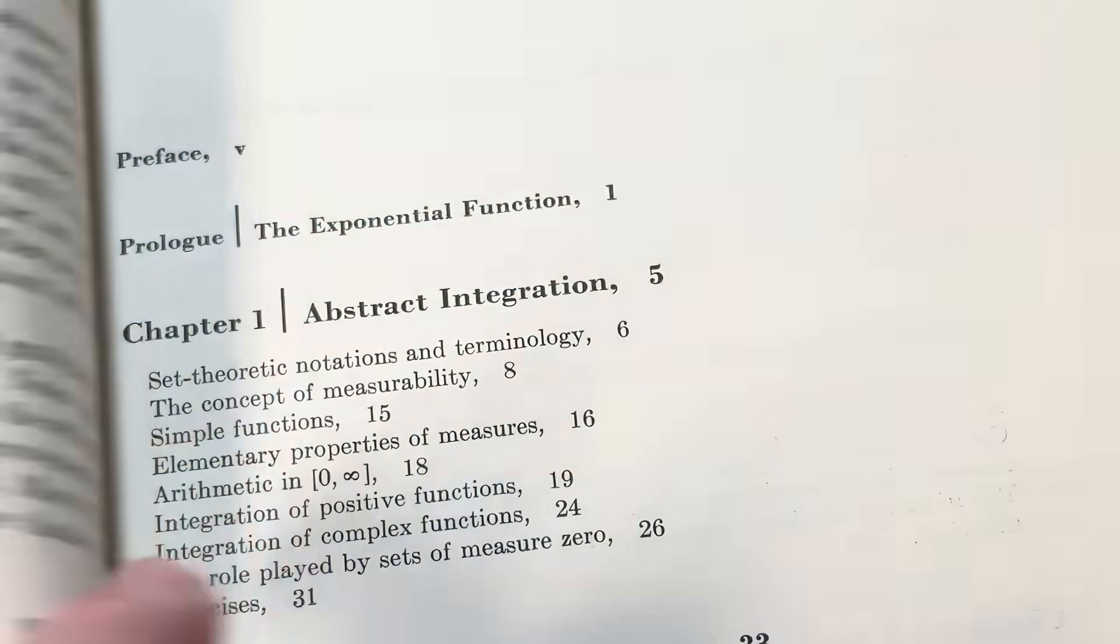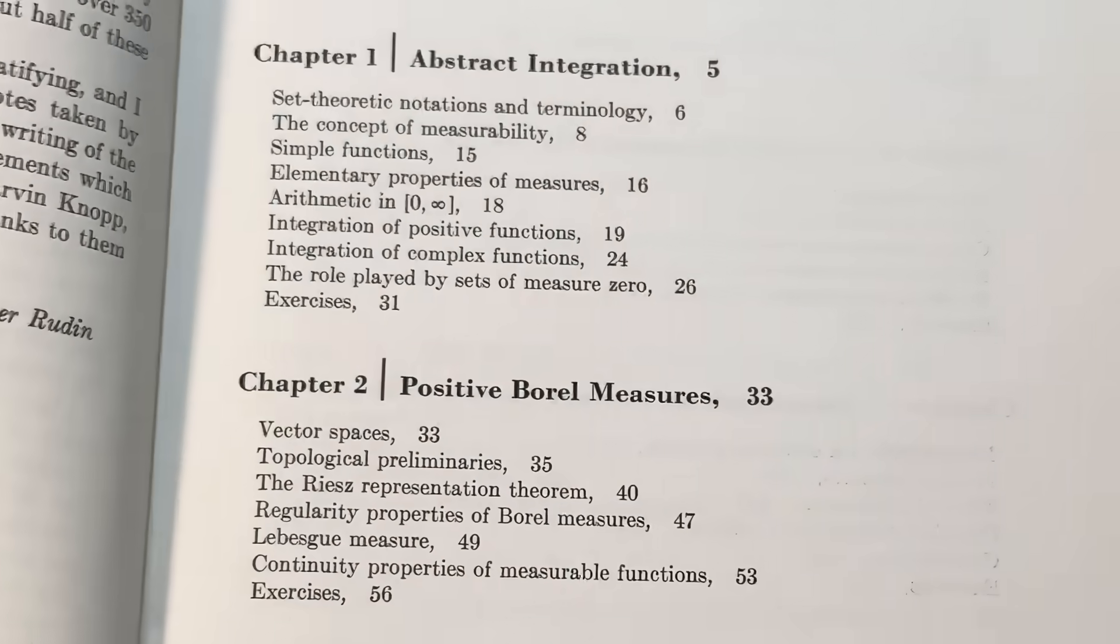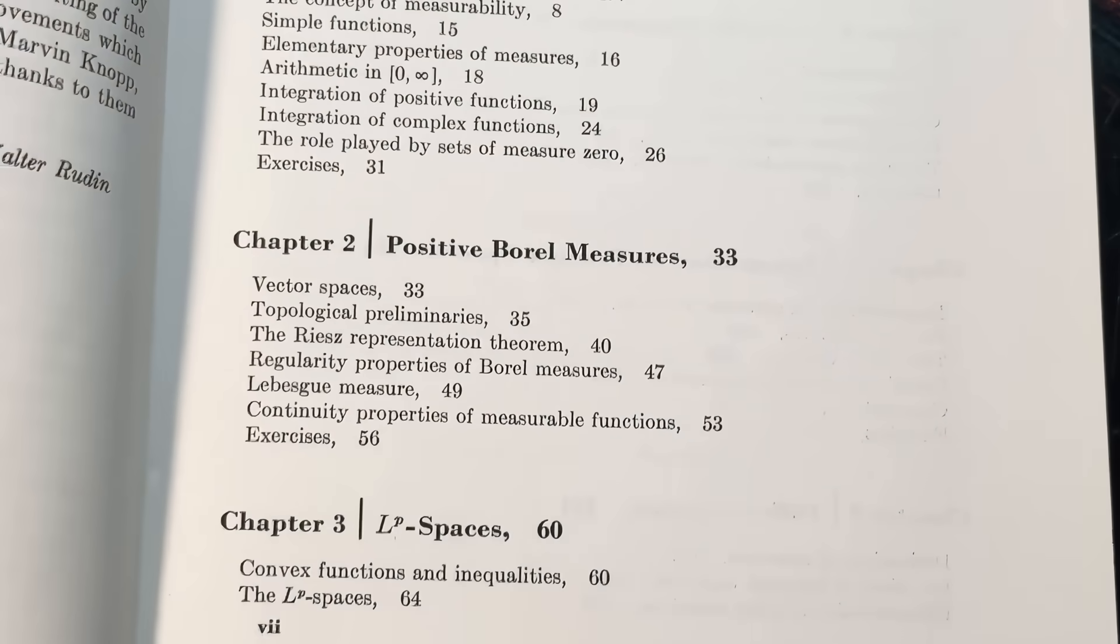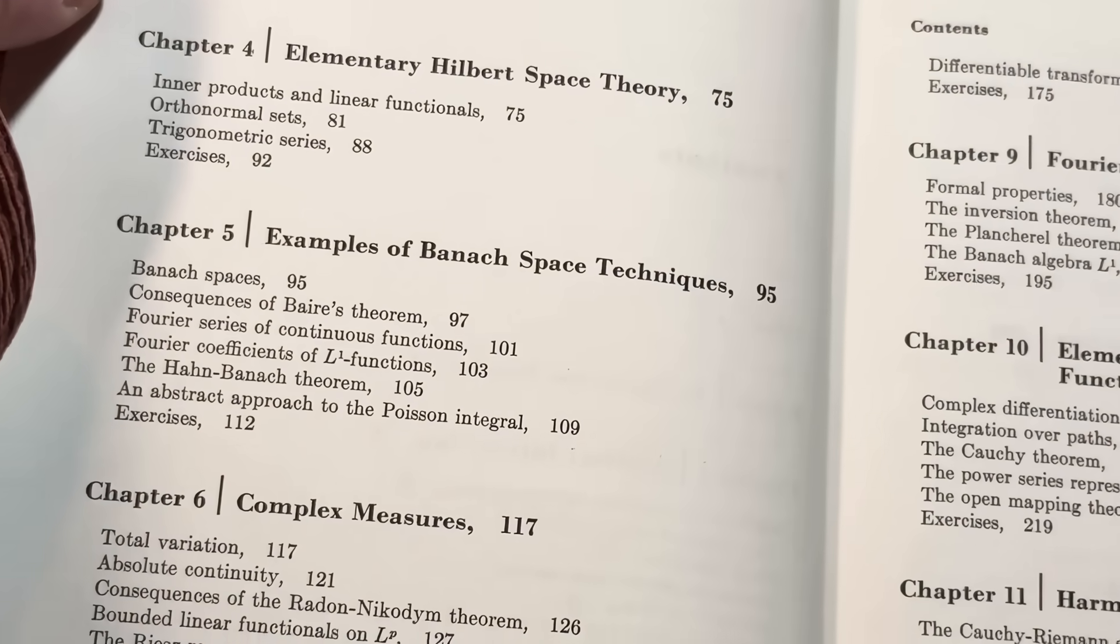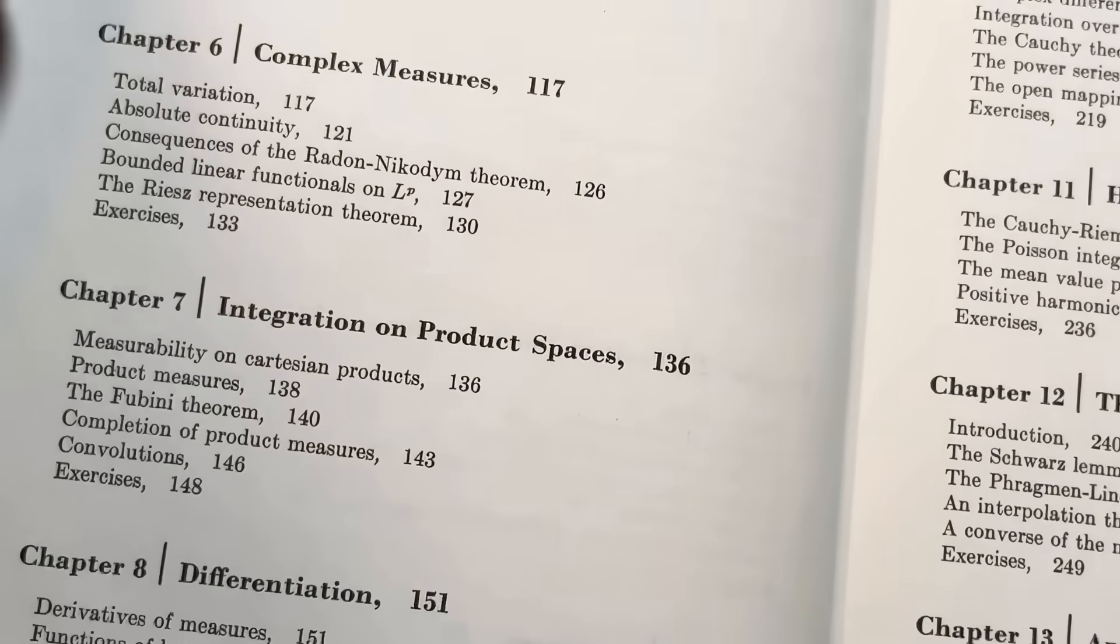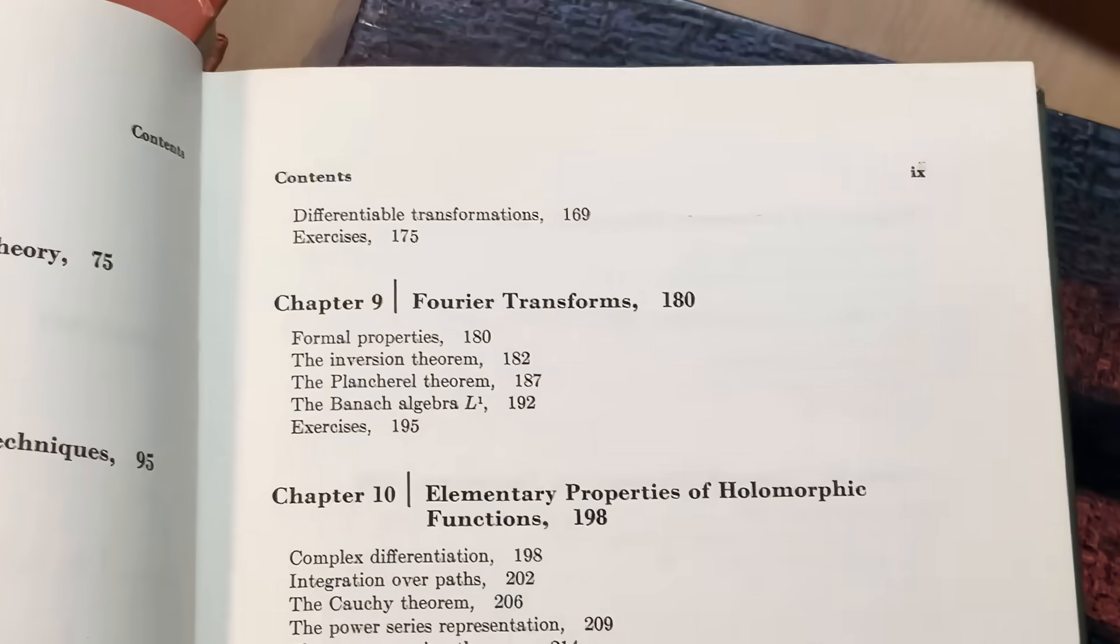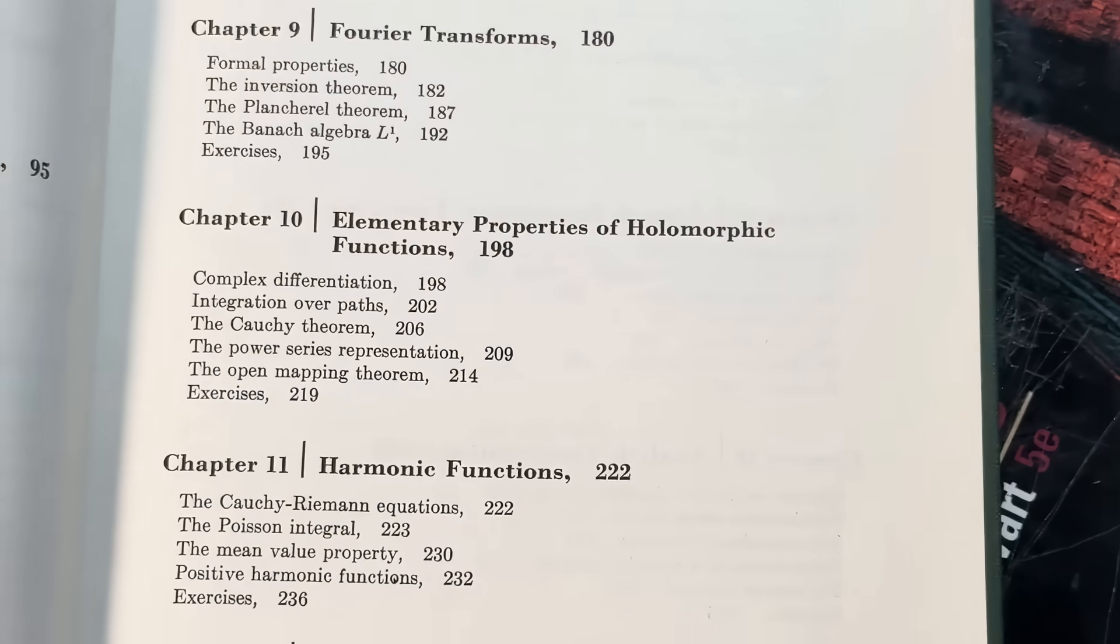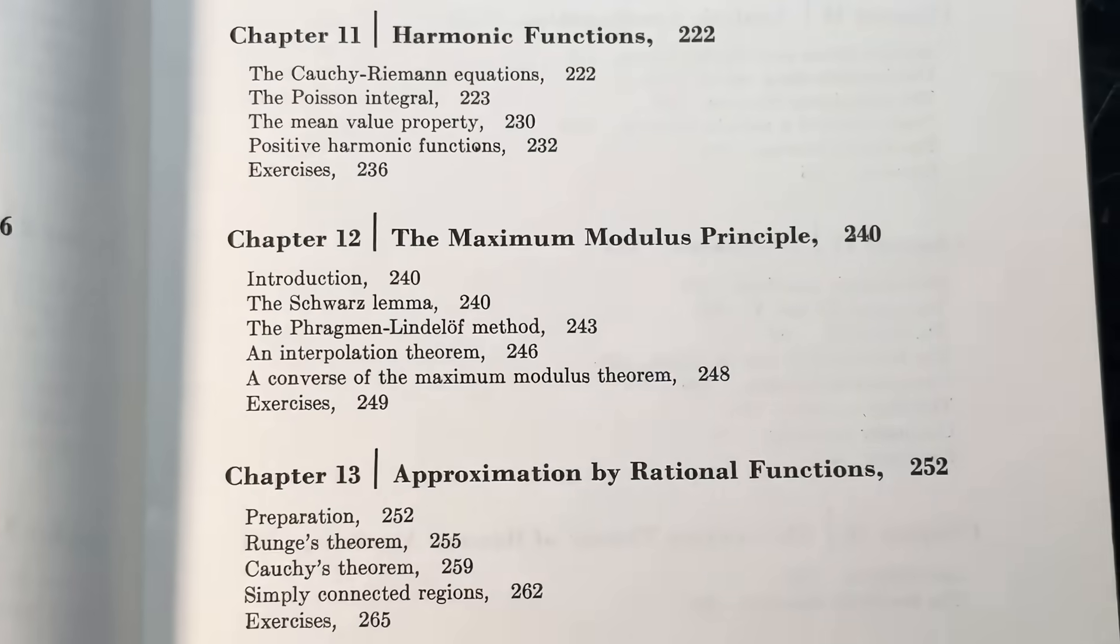Let's go to the contents. Here are the contents. Starts with abstract integration, positive Borel measures, LP spaces. Turn the page here. It's really old. You have to be gentle with it. Elementary Hilbert space theory, examples of Banach space techniques, complex measures, integration on product spaces, differentiation, Fourier transforms, elementary properties of holomorphic functions, harmonic functions, the maximum modulus principle.